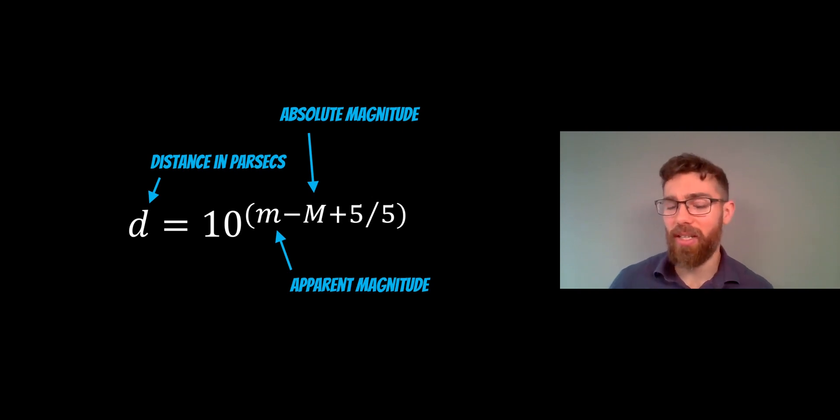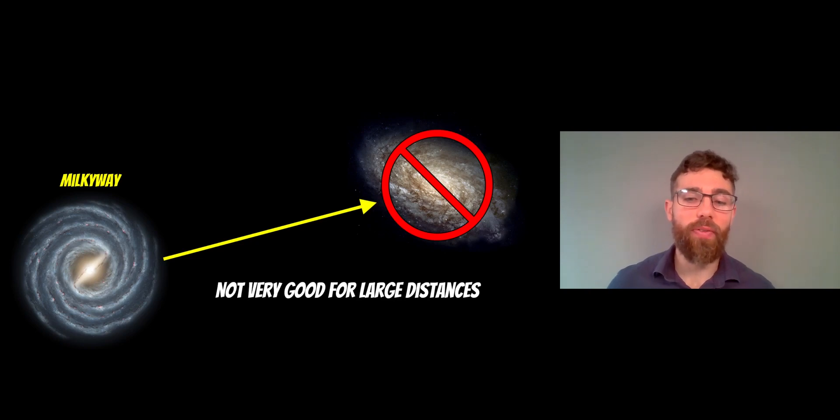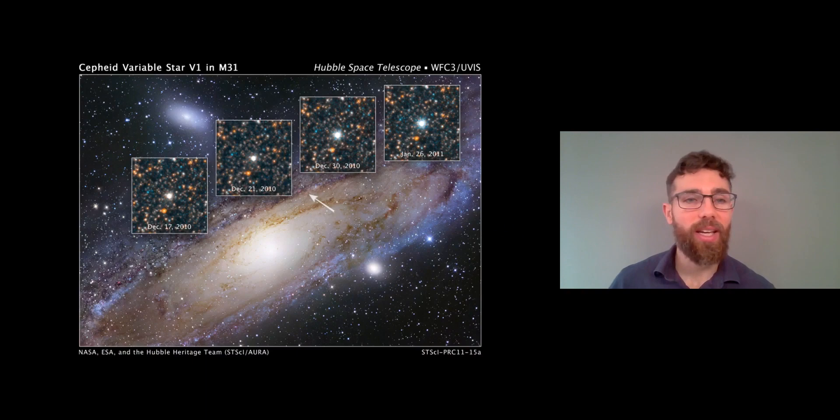Now, the downside of this technique is it's not very good for very large distances because you need to pinpoint a single star. Now, doing distant galaxies is going to be very hard because the galaxies themselves could be quite faint and they may have hundreds of billions of stars in. Picking out one star is very, very difficult. So they're not very good for large distances. They're better for distances that are kind of reasonably close. Now, the exception to that is the Andromeda galaxy, so M31. We can pick out a few individual stars there because it is our closest large galaxy. It's actually coming towards us. But we can pick out some of these Cepheid variables there and measure the distance using this particular technique.